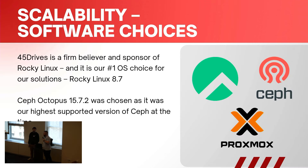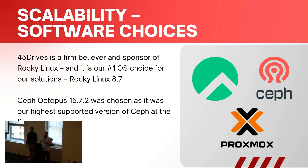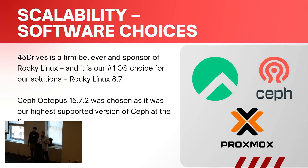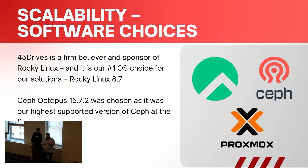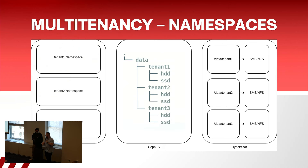Software choices were also a no-brainer. Rocky Linux is massive for us — we've been a principal sponsor of Rocky since day one and it's our number one OS choice. Our Ceph nodes were deployed on Rocky as well as the gateway VMs. This was 2022, so we were still supporting Ceph Octopus as our latest release, and Proxmox VE 7.1 was the virtualization OS.